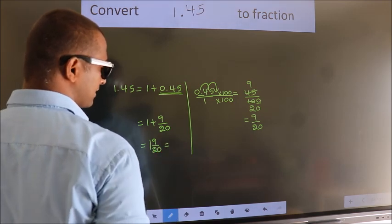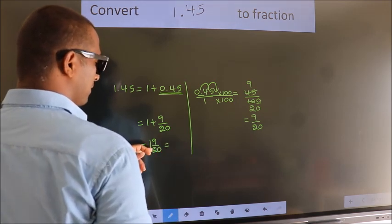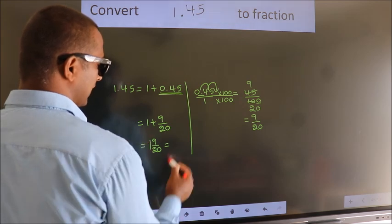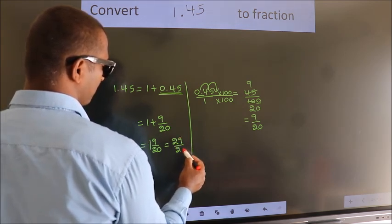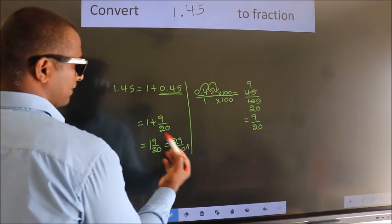And in improper fraction, it is 1 times 20, 20 plus 9, equals 29 over 20. This is our fraction. Thank you.